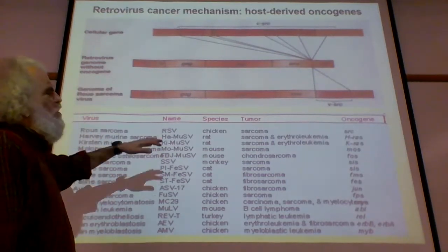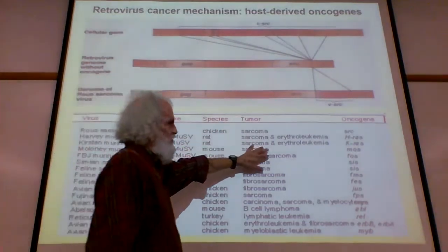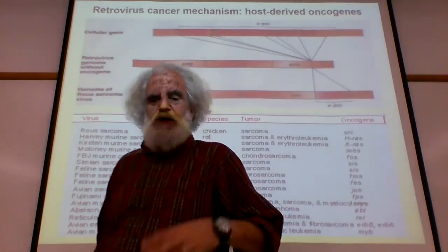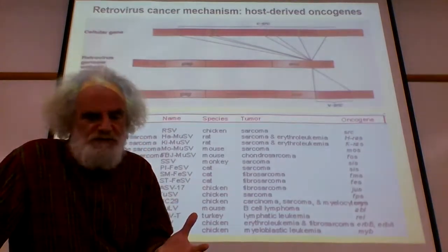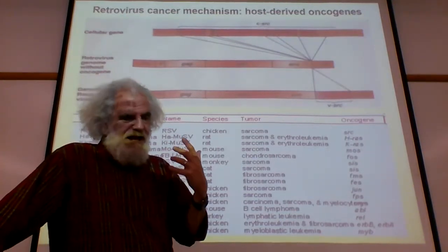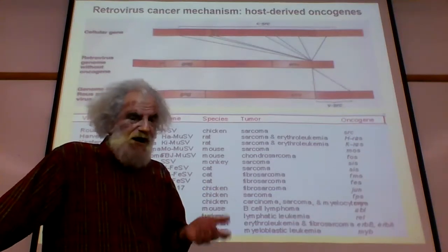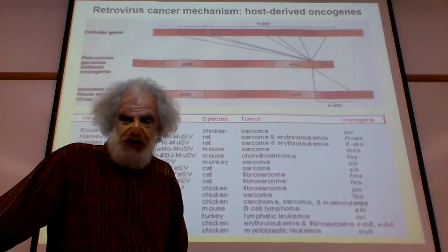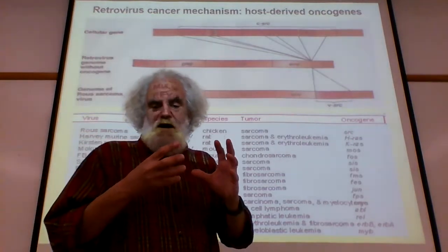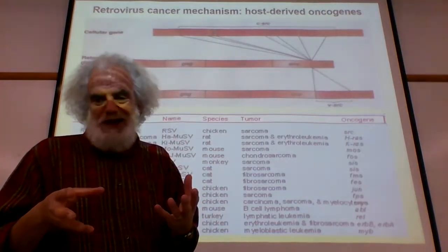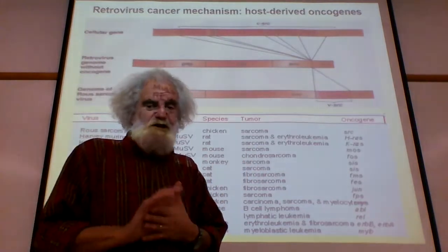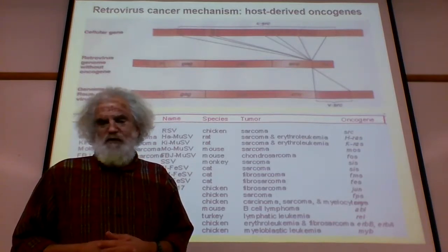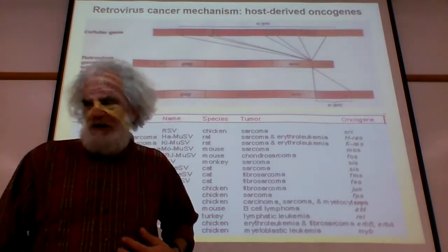What they have done is allow for the identification of the whole range of what we call oncogenes. The virus has got the mutated form, but it has been an indicator and a way of identifying in the genomes of the host these actually really important genes. In the host, the gene is under very tight regulation, or it doesn't have specific mutations that make it so it's on all the time. That's the story about oncogenes and retroviruses.